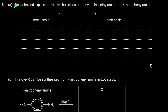Question five: describe and explain the relative basicities of phenylamine, ethylamine, and 4-nitrophenylamine. Ethylamine is the most basic because the ethyl group is electron-donating, increasing electron density on the nitrogen lone pair, making it more likely to donate to a proton. Phenylamine is less basic because the lone pair is delocalized into the benzene ring, reducing electron density on nitrogen.